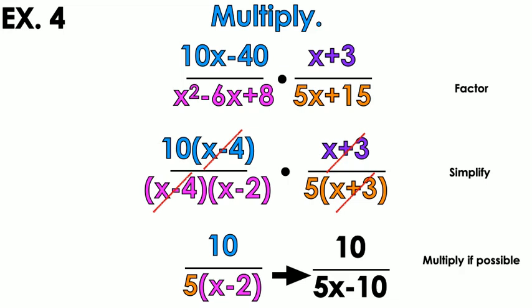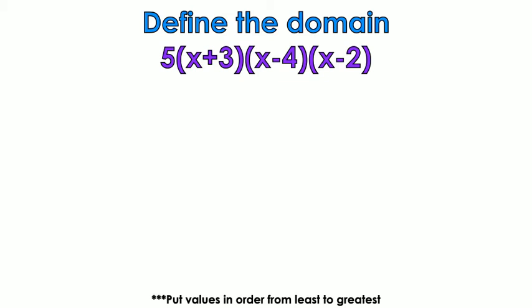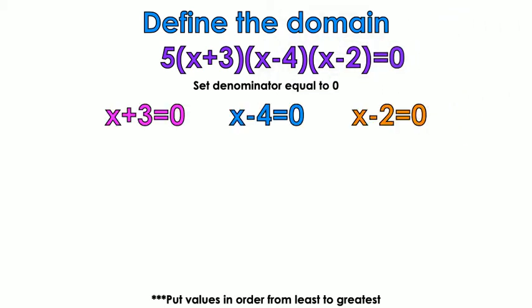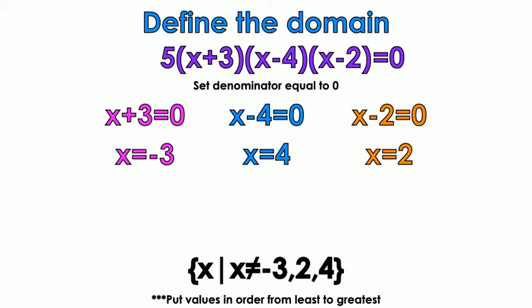Finding the domain for example 4: look at the denominators. x squared minus 6x plus 8 factors to x minus 4 and x minus 2. And 5x plus 15 factors to 5 times the quantity x plus 3. Setting each factor equal to 0: x plus 3 equals 0 gives x equals negative 3; x minus 4 equals 0 gives x equals 4; x minus 2 equals 0 gives x equals 2. So x ≠ negative 3, 2, or 4 — those are the values where the domain is undefined.